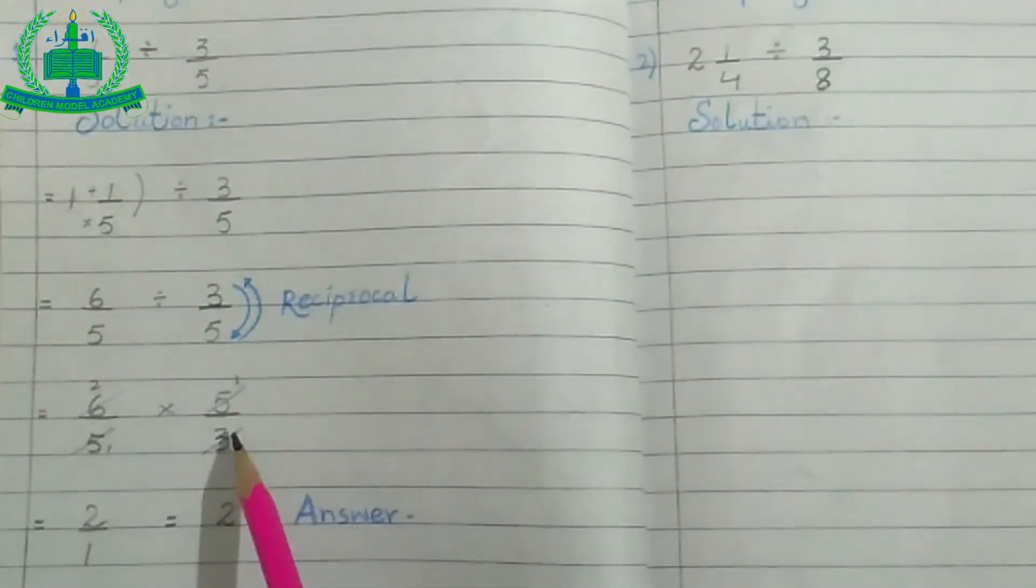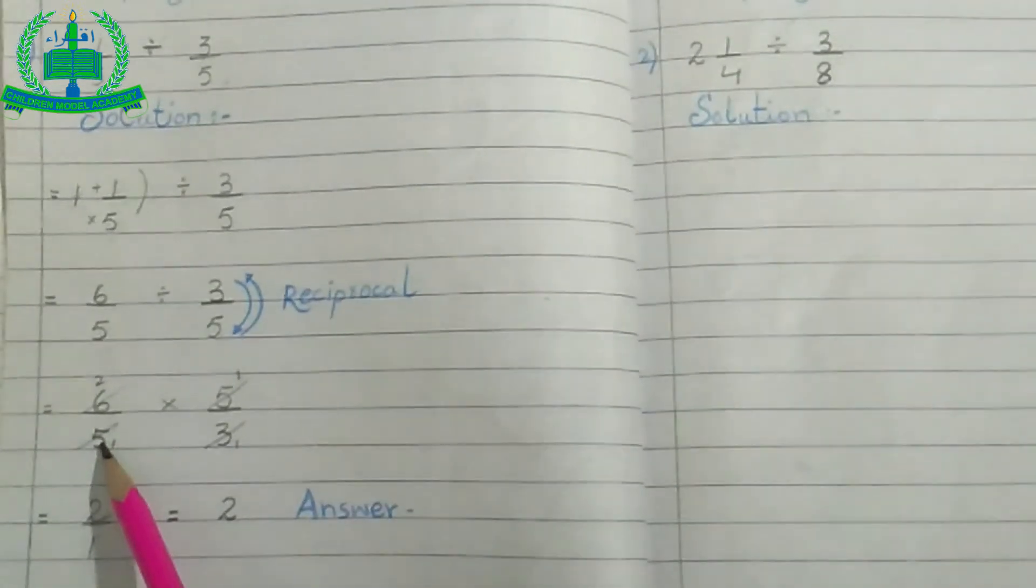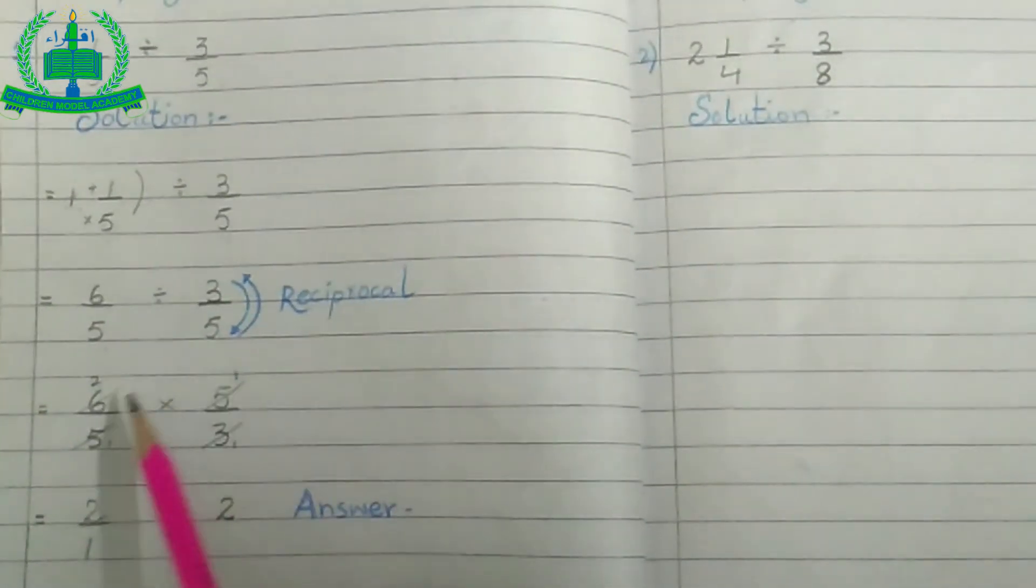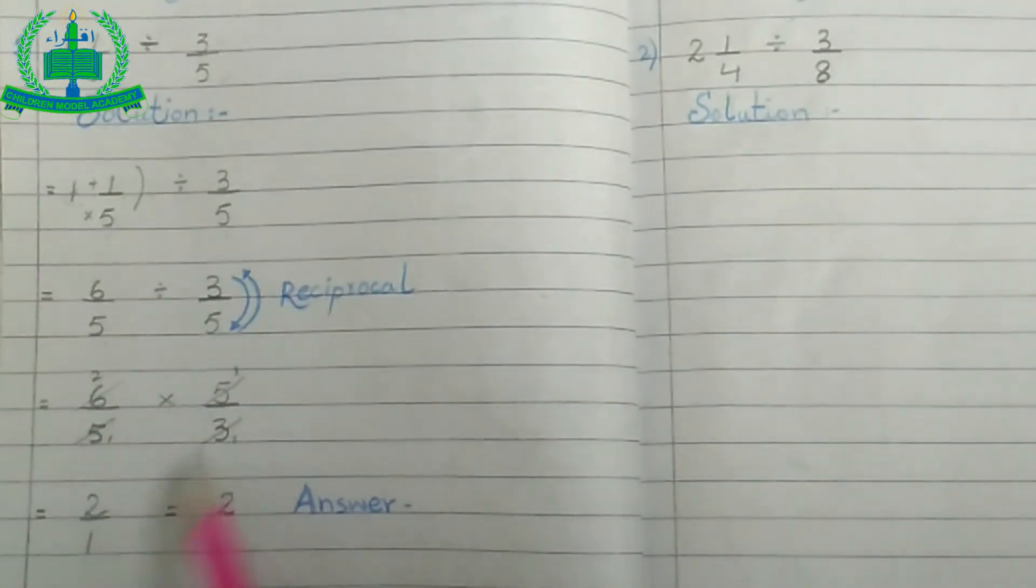Now, cross cancellation. 3 times 1 is 3, 3 times 2 is 6, 5 times 1 is 5, 5 times 1 is 5. Now, 2 multiply by 1, 2 times 1 is 2, 1 times 1 is 1.